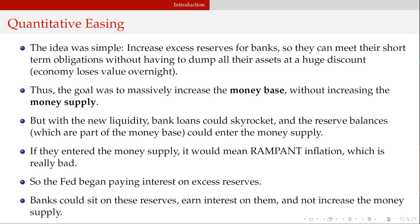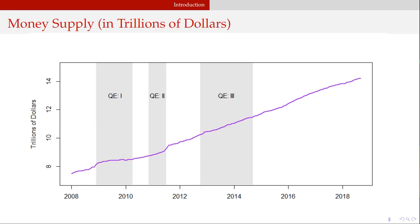So banks got to sit on these reserves and earn interest on them. The money supply between 2008 and 2010 really didn't see much of a change — it ultimately still followed its long-run trend. Quantitative easing at least did the right thing by not affecting the money supply, which is good.